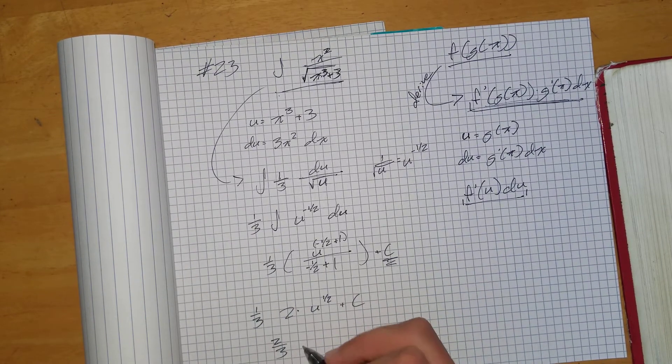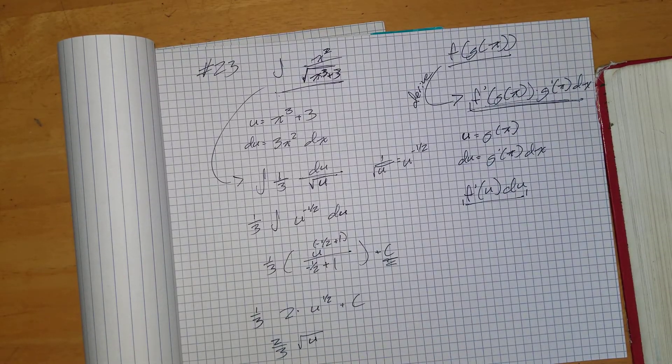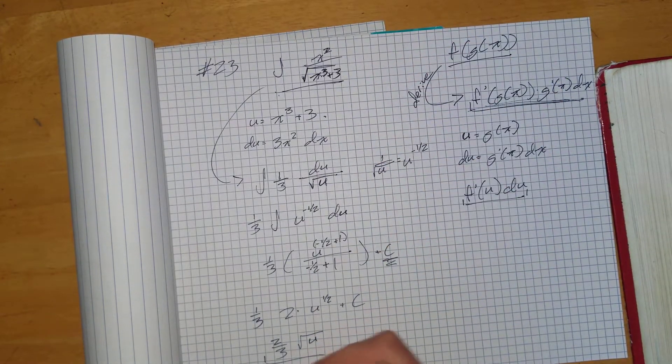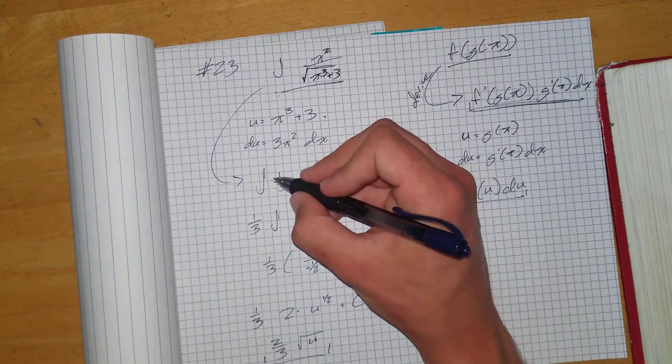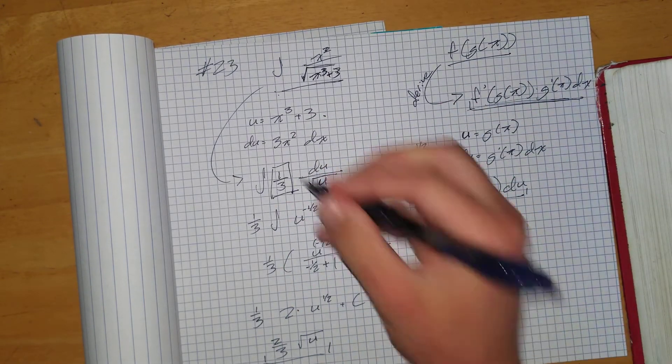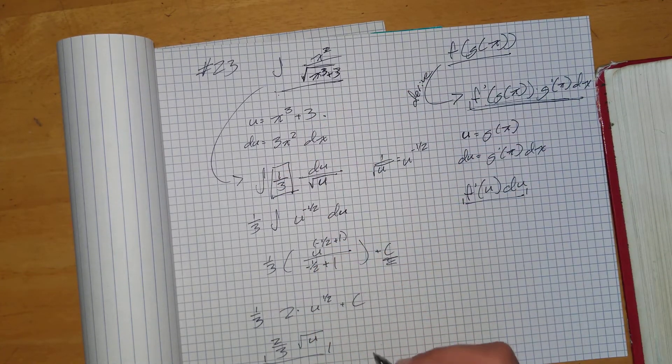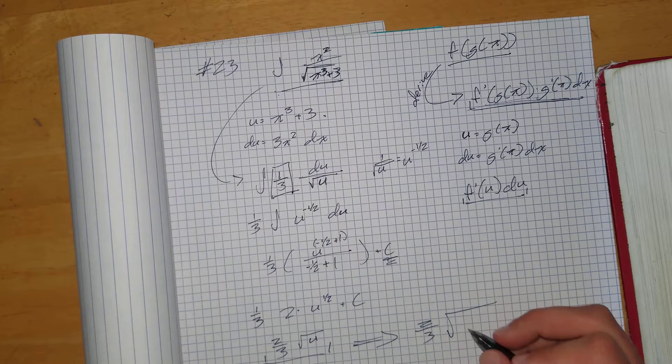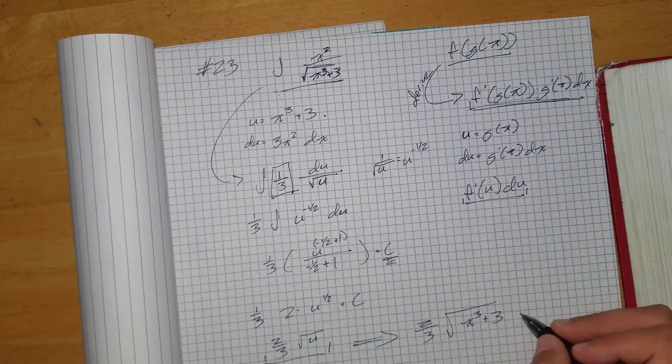So 2 over 3 times the square root of u. And now we just sub in this for u, right? And we don't have a du down here. So we don't have to bother with this anymore. We basically just do the du so that we get that 1 third there. So we know what to multiply by to get rid of that. So again, no du. So I don't have to plug in du, but I will plug in for u. So 2 over 3 square root of x cubed plus 3, plus c.